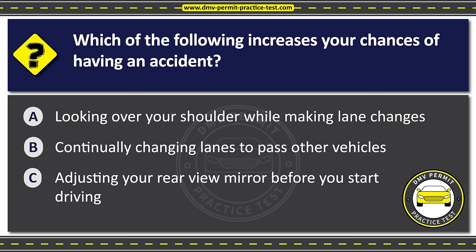Question thirty-seven. If you are involved in a collision and no one is injured, you should. Option A: Exchange information with the other party and leave the scene. Option B: Move your vehicle off the road if possible and call for assistance. Option C: Leave your vehicle in the traffic lane until the police arrive. The correct answer is Option B: Move your vehicle off the road if possible and call for assistance.